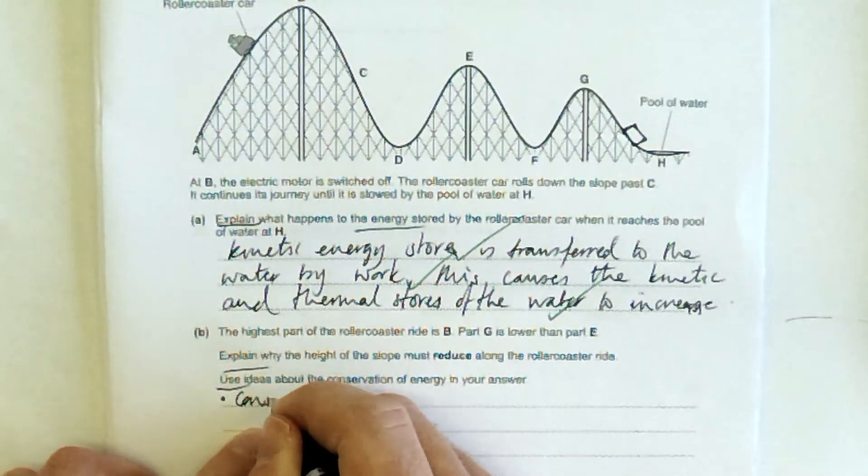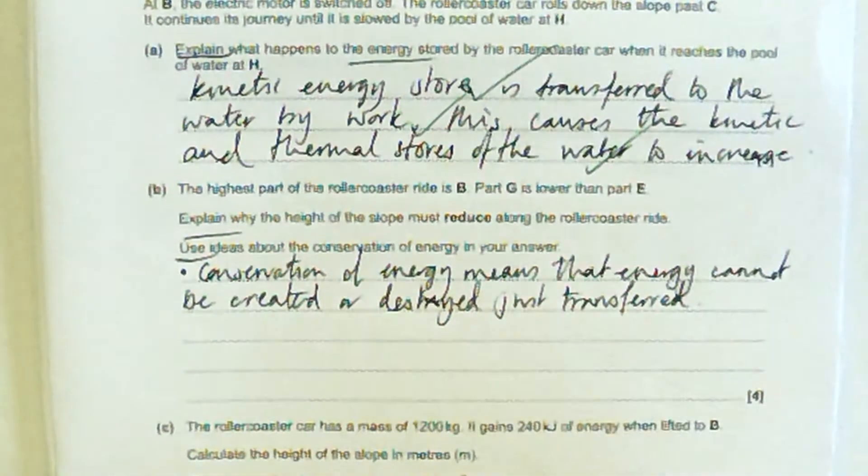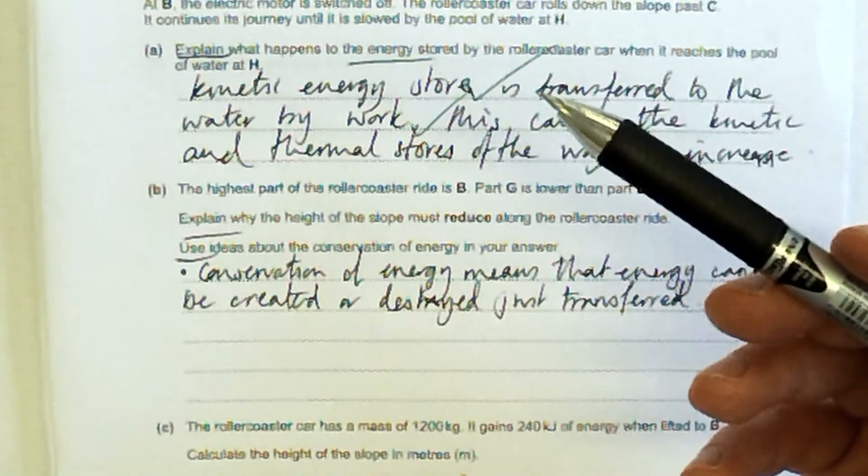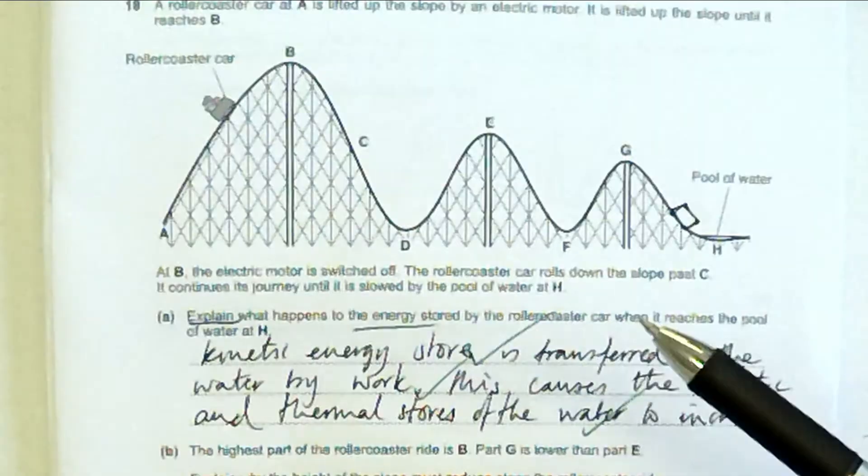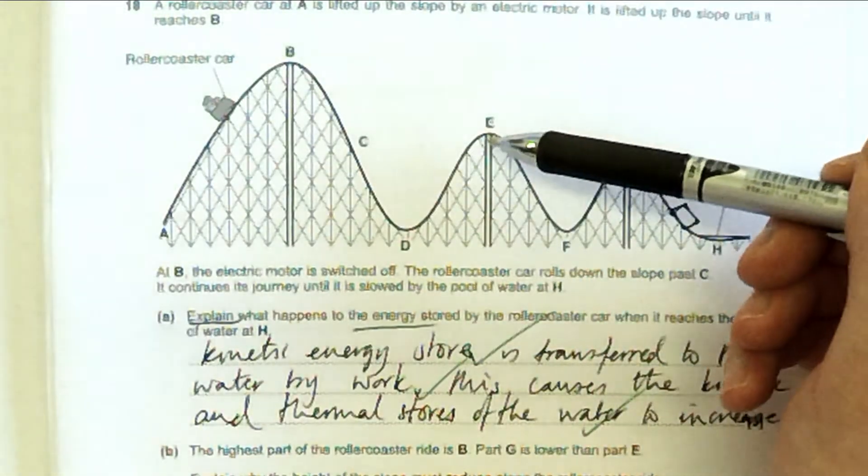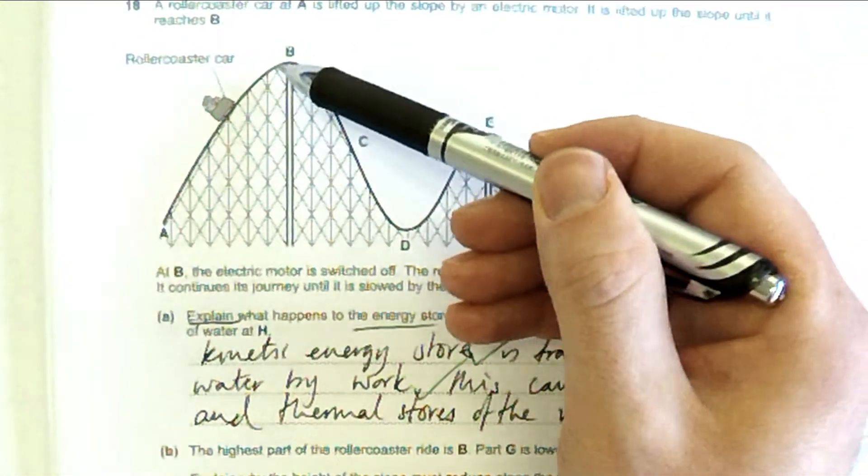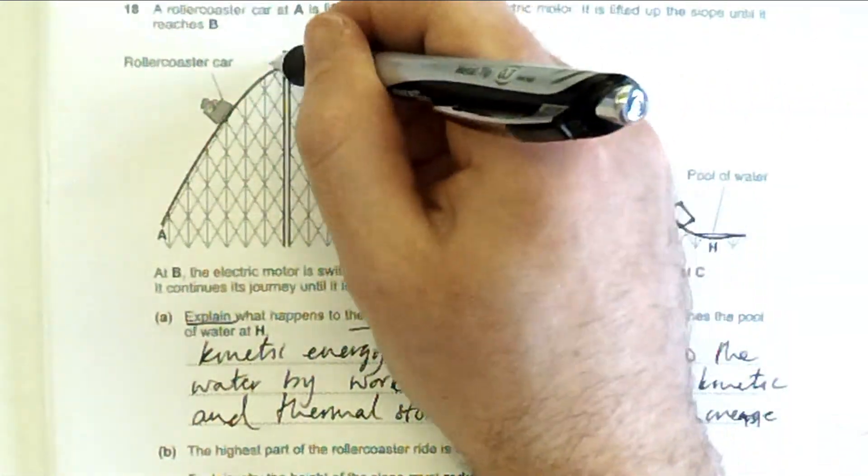So what does conservation of energy mean? Conservation of energy means, or in other words, the energy at the start is equal to the energy at the end. That's a simpler way to put it, I guess. So what we need to really talk about is that the reason why E is lower than B and G is lower than E is because not all of the gravitational potential energy at B